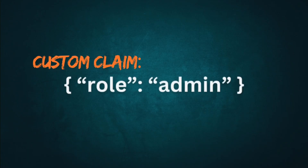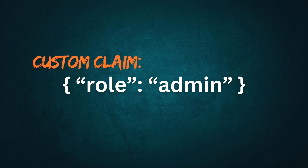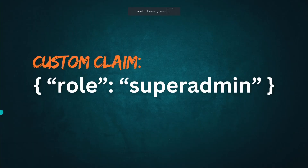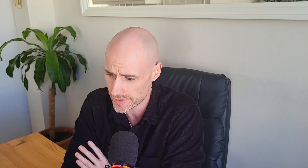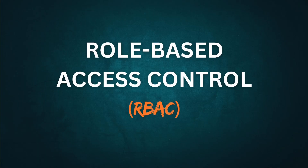Since the custom claim is so secure, we can now add the isAdmin claim. The common convention is to use the key-value pair role: admin. You could set the custom claim as anything — super admin, manager, or executive in charge of ice cream. This is called role-based access control. But remember, if you implement RBAC this way, the user will need to wait an hour or log out and log back in. So you may need to find a balance between this high-security approach — like you need for admins — and user experience.